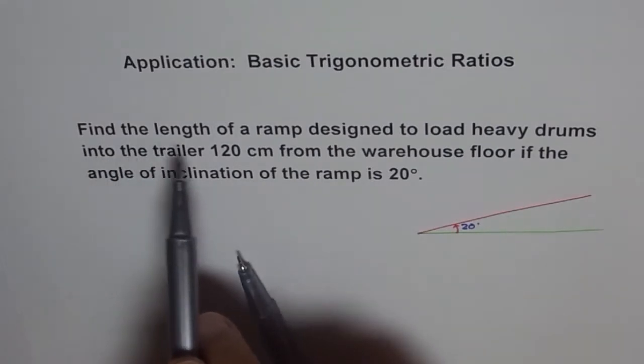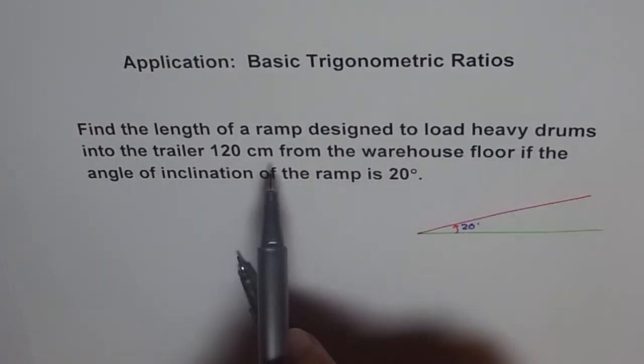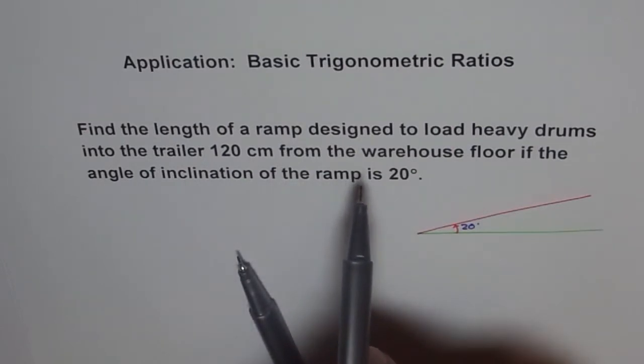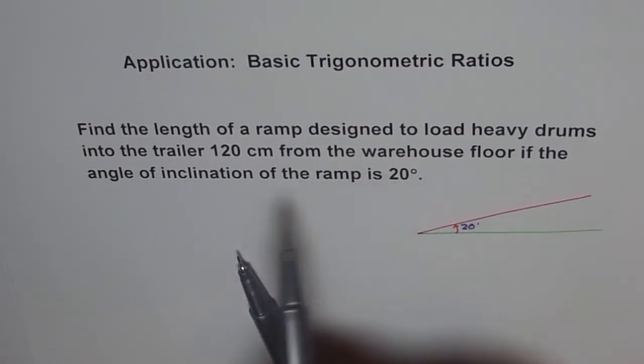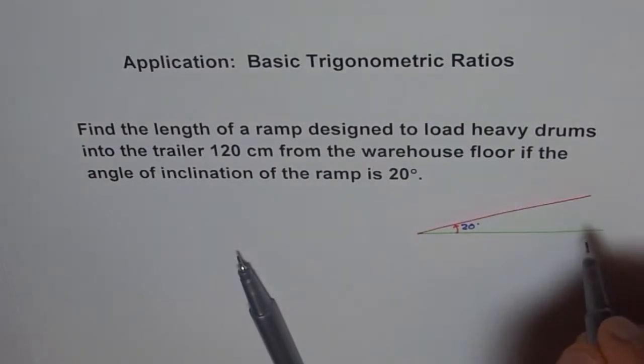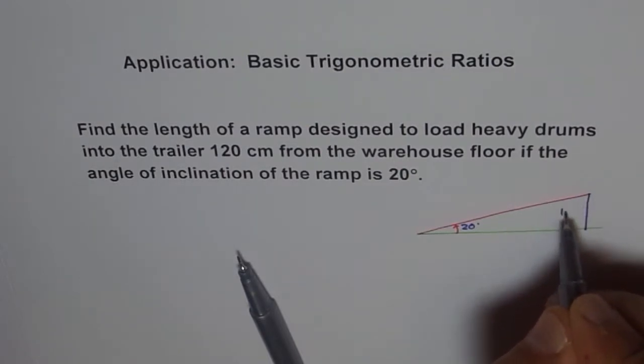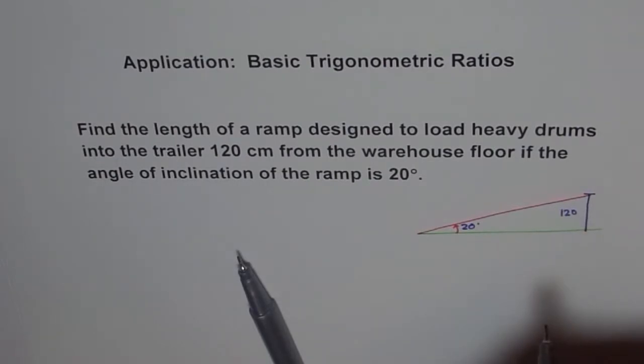Find the length of the ramp designed to load heavy drums into the trailer 120 cm from the warehouse floor if the angle of inclination is this. So from the floor, the height is 120 cm. And that's how it is.